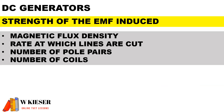To influence the strength or size of the induced EMF, you can increase the magnetic flux density, increase the rate or speed at which the lines are cut, increase the number of pole pairs, or increase the number of coils.